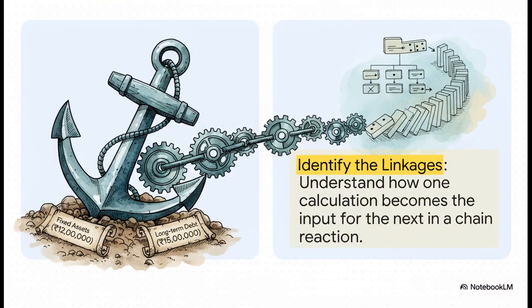Here's our simple two-step approach. First, we find and lock down our anchors: 12 lakhs in fixed assets and 15 lakhs in long-term debt. These are our facts, they are non-negotiable. Second, we start to map out the linkages. The real key here is to see how finding one value immediately unlocks the next one. It creates this beautiful logical chain reaction that will solve the entire puzzle for us.